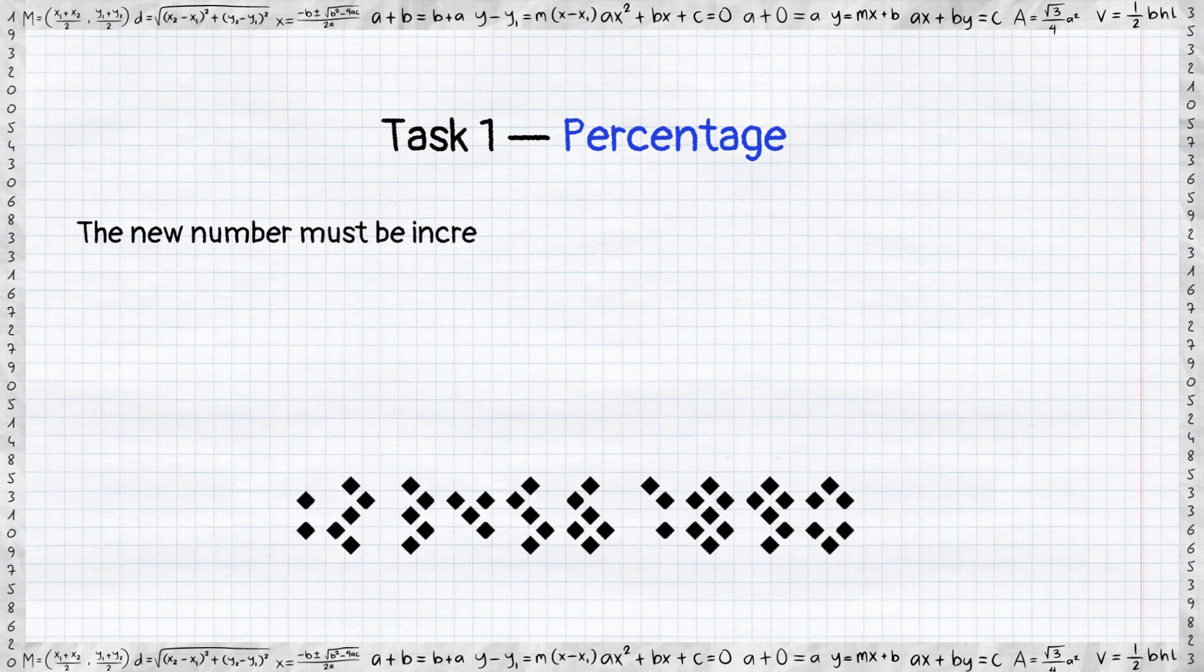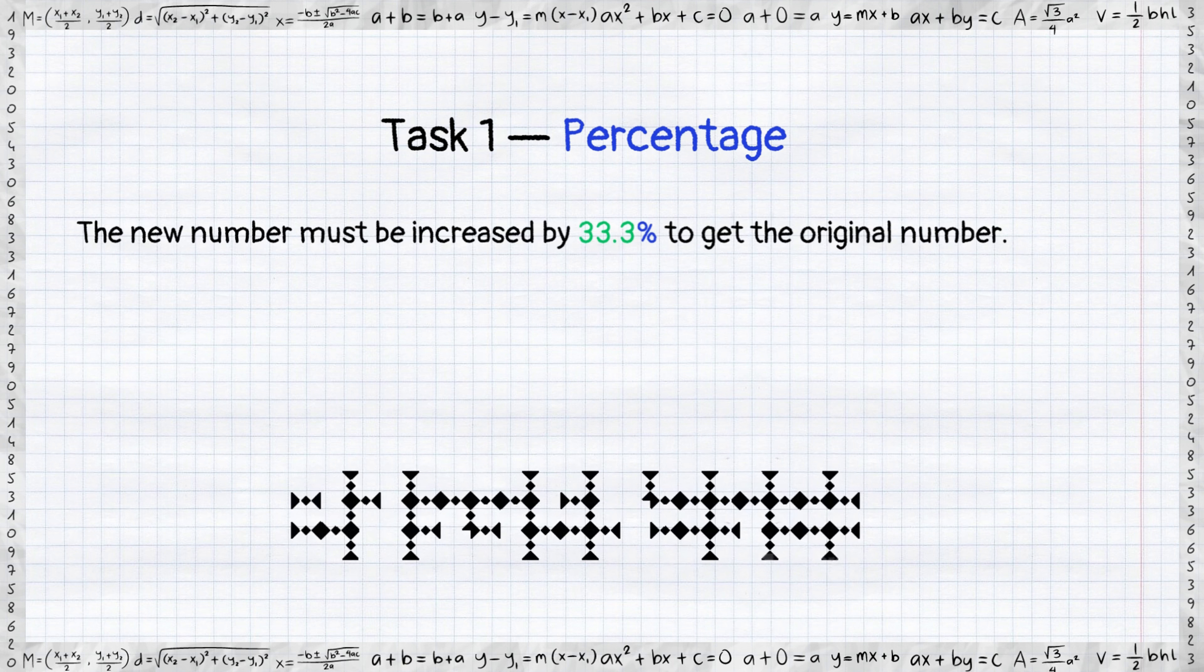The new number must be increased by 33.3% to get the original number.